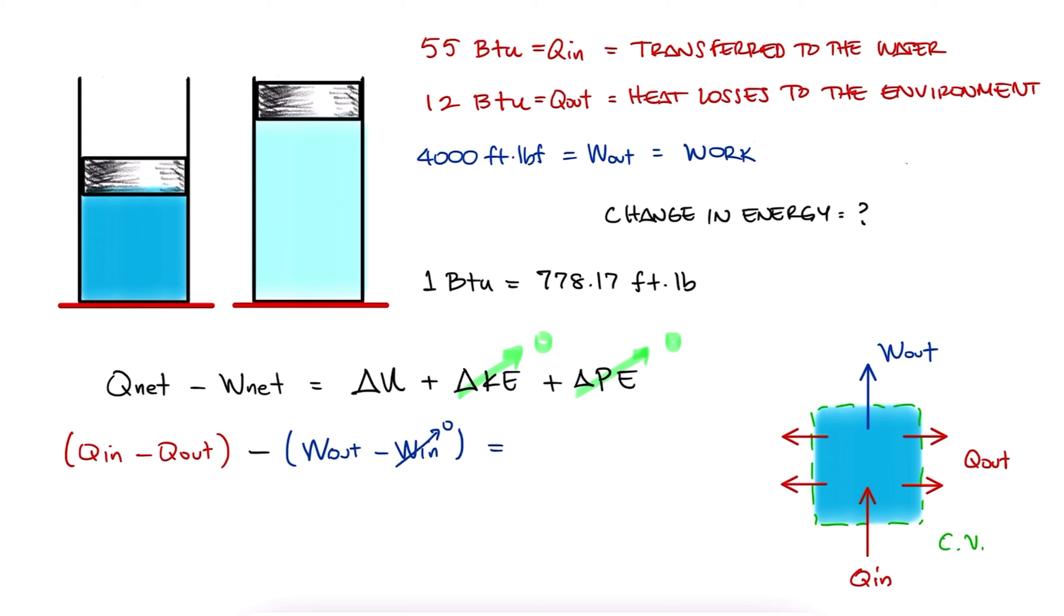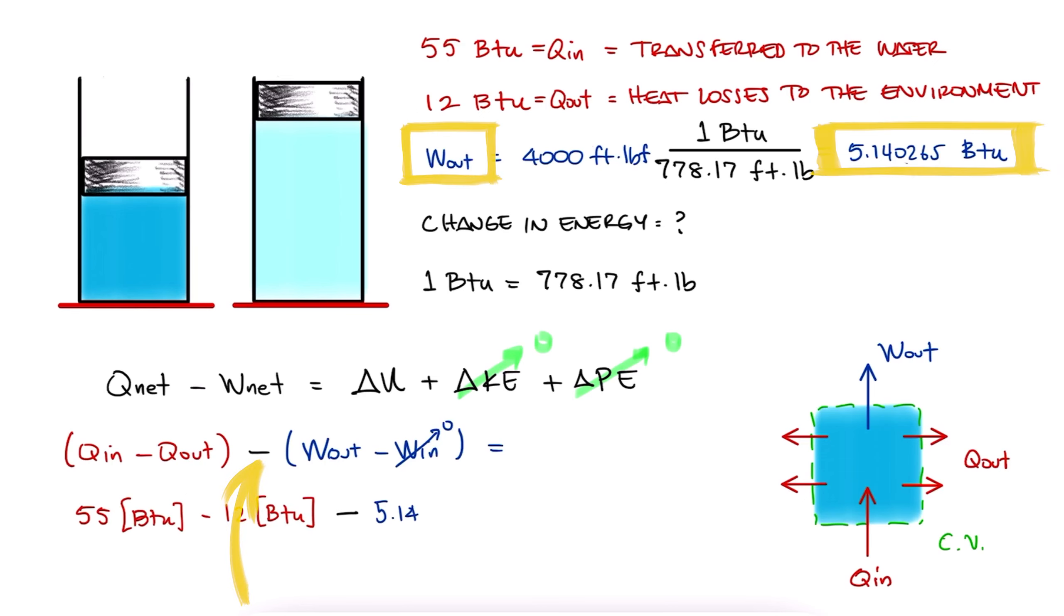And with a quick unit conversion, we see that 4000 ft-pound is 5.14 BTU. Of course, this value is positive, but the negative sign from the conservation of energy equation is still there. So, we end up with 55 minus 12 minus a positive 5.14. The total change in energy for the water is therefore 37.9 BTU.